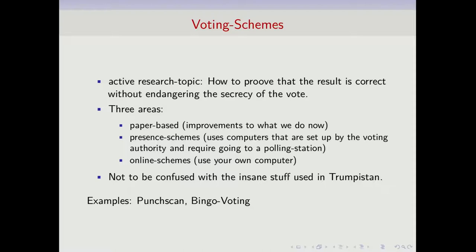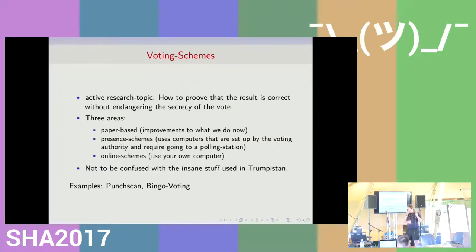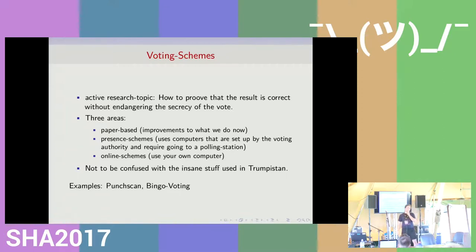You go into the polling station, you get some papers, and there is a minor difference in how you cast your vote. For instance, you get a stamp and you have two papers, and there is a hole in the upper one, and you put your stamp so that both are marked in the same spot. Then you get some kinds of proof that hopefully allow you, on one hand, to demonstrate if the election was rigged, and on the other hand, still preserve the privacy of the vote. If you want to look into it, punch scan might not be the most terrible point to start at.